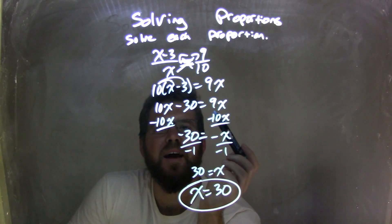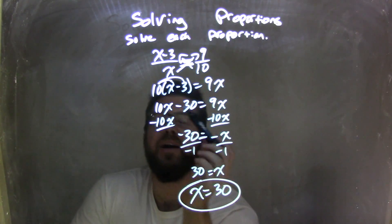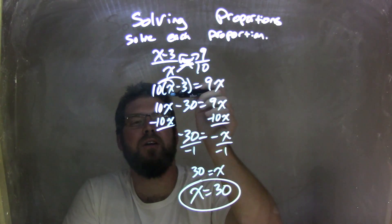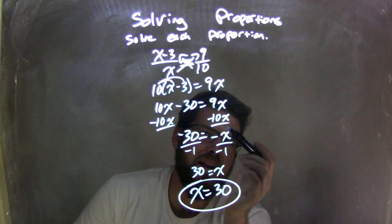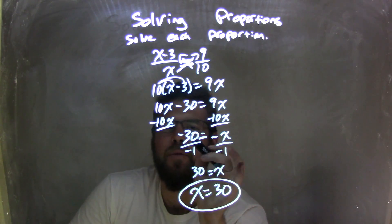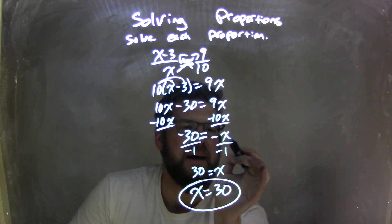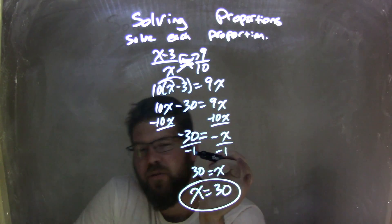I then distributed the 10 across to get 10x minus 30 equals 9x, and then I subtracted 10x from both sides, leaving me with negative 30 equals negative x. I then divided by negative 1 on both sides.